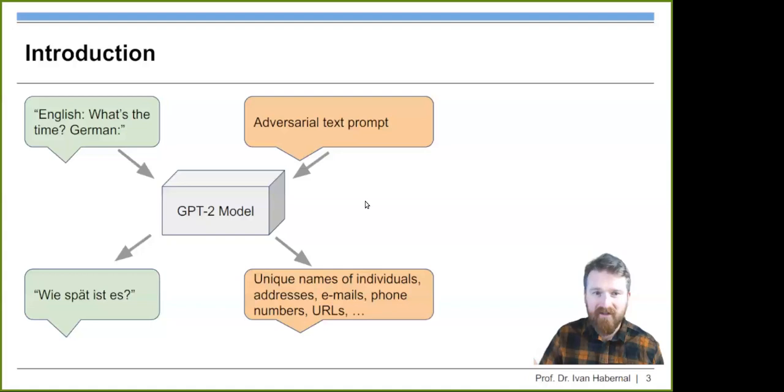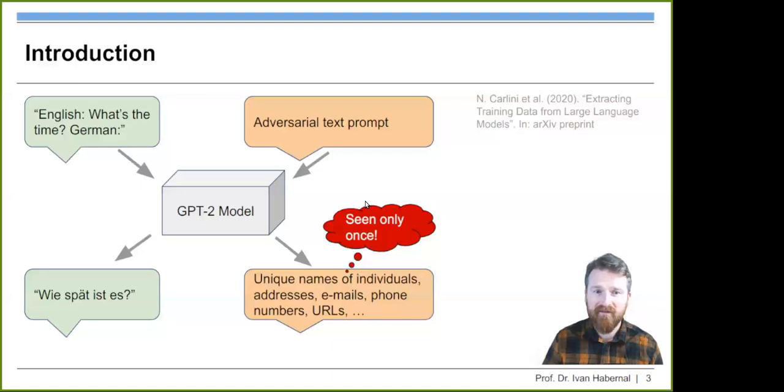If you're a bad guy and you write a prompt that is somehow adversarial, you're trying to prompt the model to leak something. The GPT-2 model will do the same thing as we just saw with ChatGPT. It will spit out unique names of individuals, addresses, emails, phone numbers, URLs, social security numbers from the pre-training data of GPT-2, even though this has been seen only once. This is actually now quite an old paper from Nicholas Carlini extracting training data from language models.